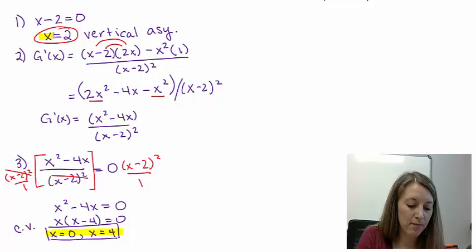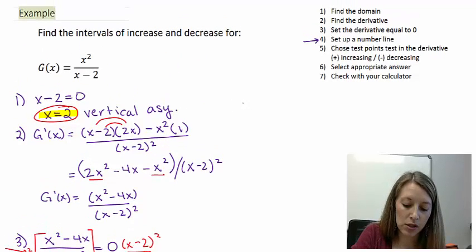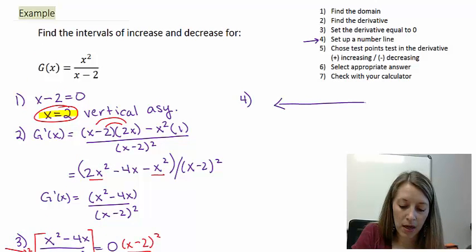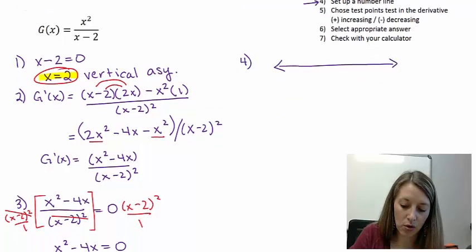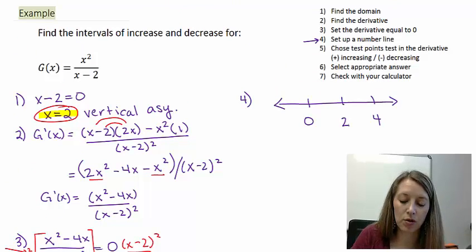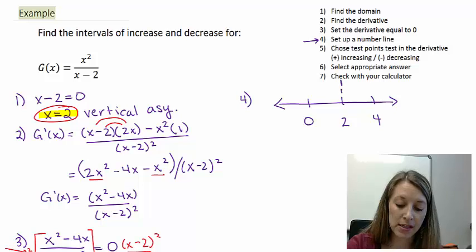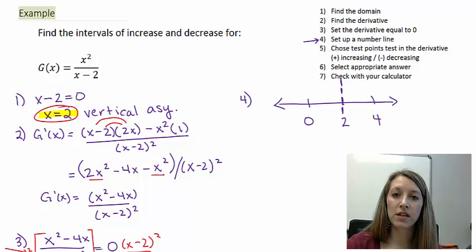I have my critical values and my restriction on the domain. Those are the things I'm going to place on my number line, which is step 4. My number line consists of my two critical values, 0 and 4, and also my domain restriction of 2. If I leave it as-is, the 2 looks like a critical value, which it's not — it's a vertical asymptote. So I draw it as a vertical asymptote to remind myself, and that will affect us when we get to the relative extrema part of this section.